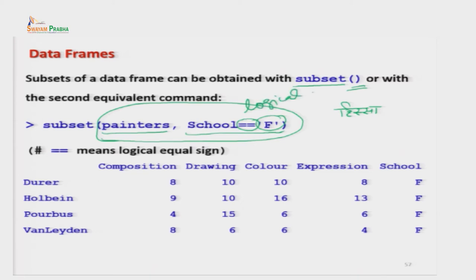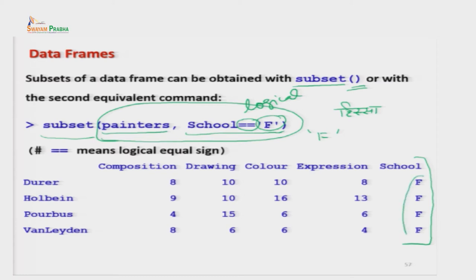यह logical operation होगा और F हमारा character है इसलिए इसको single quote में दिया है। हर एक command का help menu देखें कि options क्या-क्या होते हैं - बिना quote के देना है, single quote में देना है, double quote में या comma, colon, semicolon लगाना है। मेरी advice है कि कोई भी नया command इस्तेमाल करने से पहले उसका help menu पूरा विस्तार से पढ़ें। जब हम subset(painters, school == 'F') execute करते हैं तो outcome में सारे school F वाले painters आ जाते हैं।